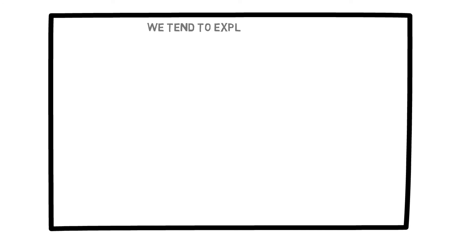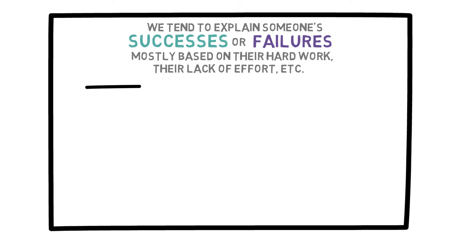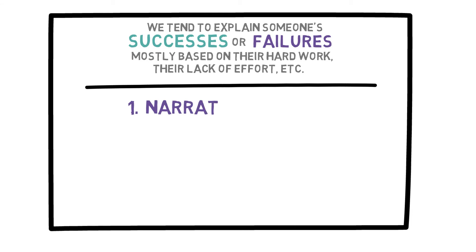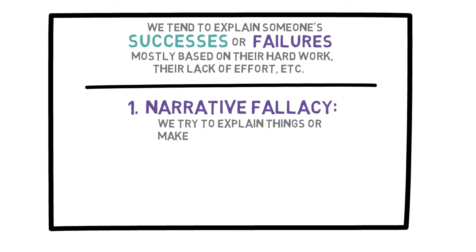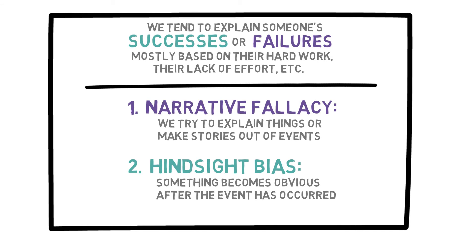But this example reveals a lot about the way we think about many things in real life regarding the difference between skill and luck. In many real life situations, we tend to explain someone's successes or failures mostly based on their hard work, their lack of effort, and so on, just like we did with the students' exam results. There are two important concepts at work here. The first is called the narrative fallacy, wherein we try to explain things and make stories out of events. The second is the hindsight bias, which is where something becomes obvious after the event has occurred.